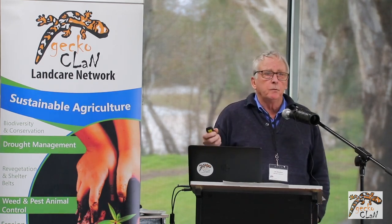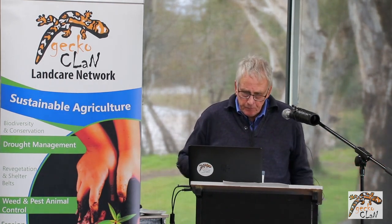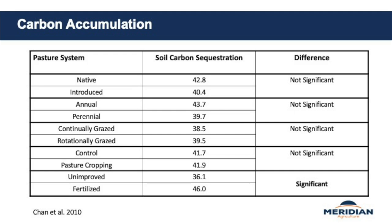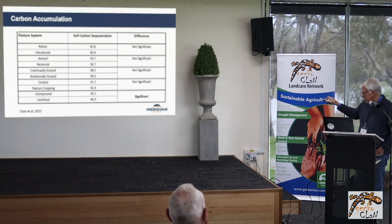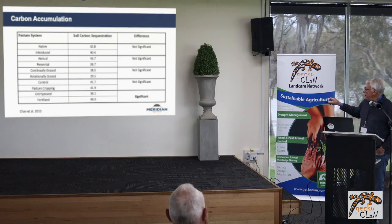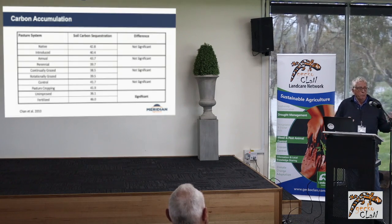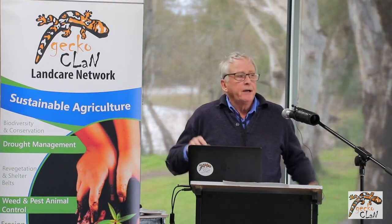There are a whole lot of movements saying if you do all these things you're going to increase your soil carbon. Looking at some data from New South Wales using paired paddock comparisons, they looked at native versus introduced, annual versus perennial, continuously grazed versus rotationally grazed, control versus pasture cropping, and unimproved versus fertilised. The only one that was significant was putting fertility into the system, growing more pasture.